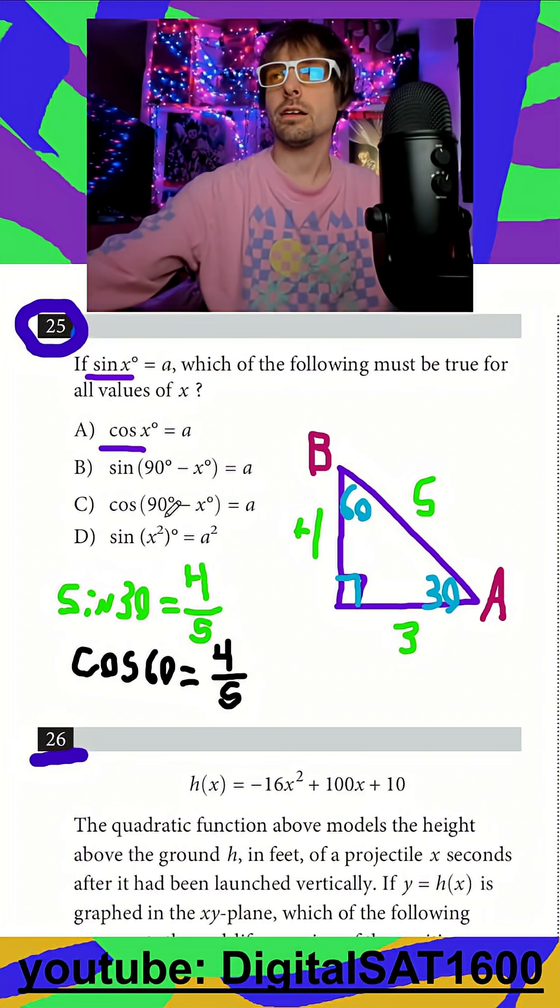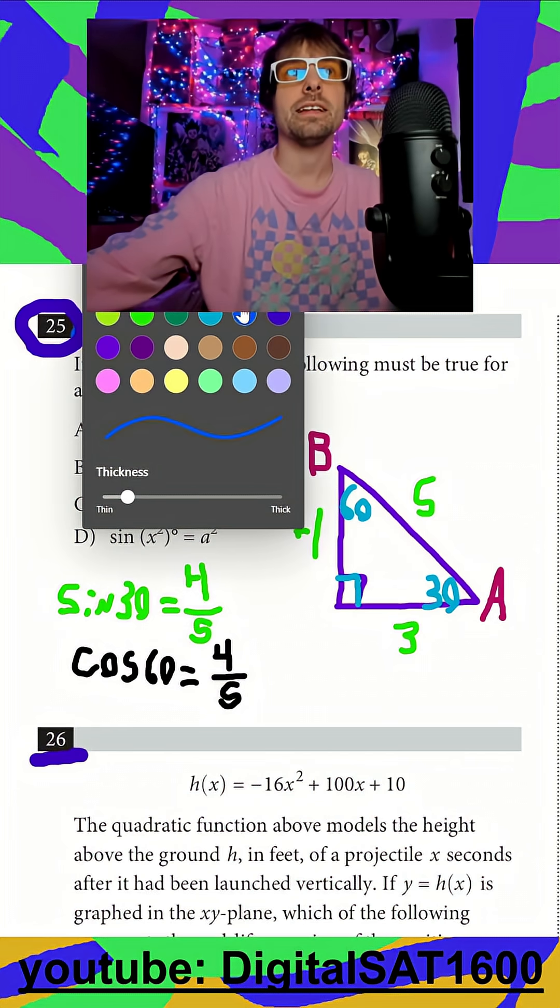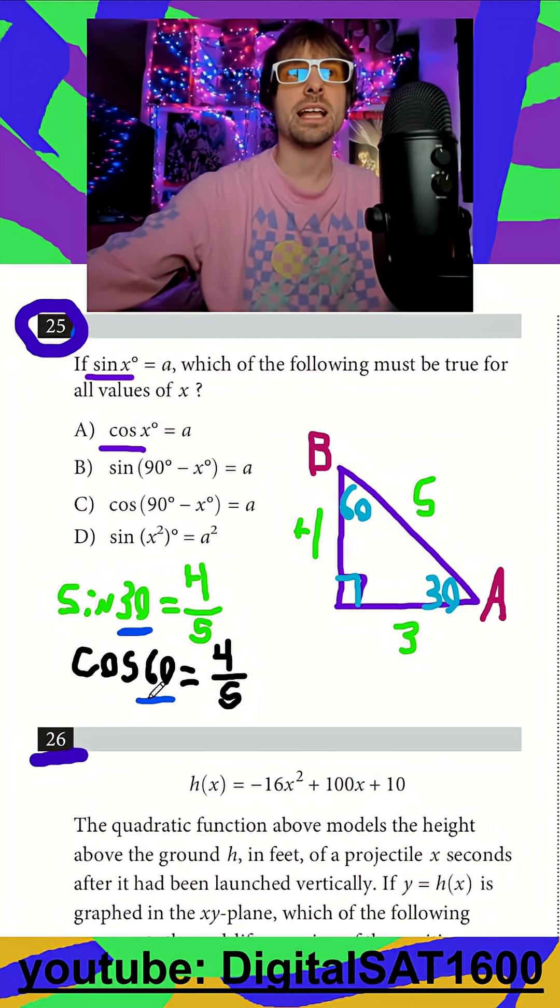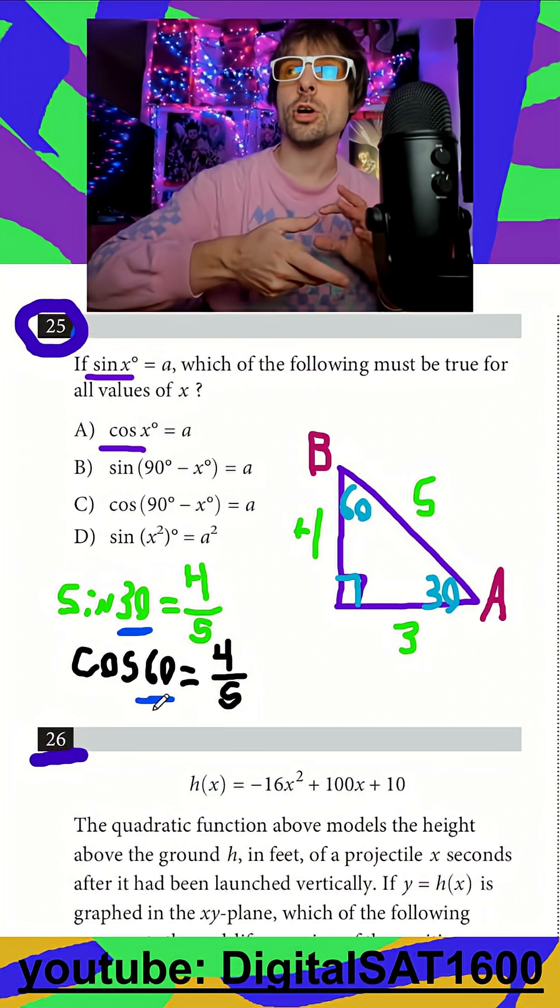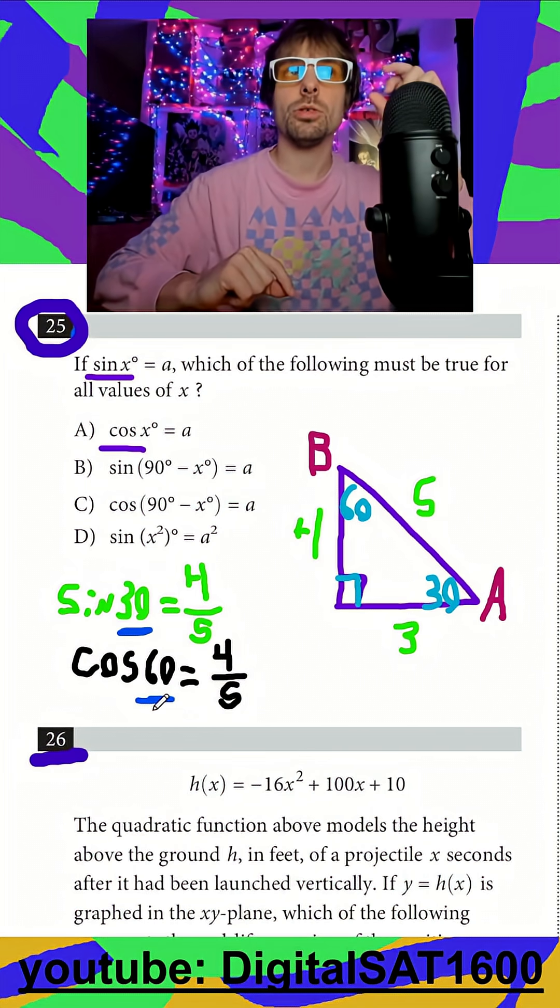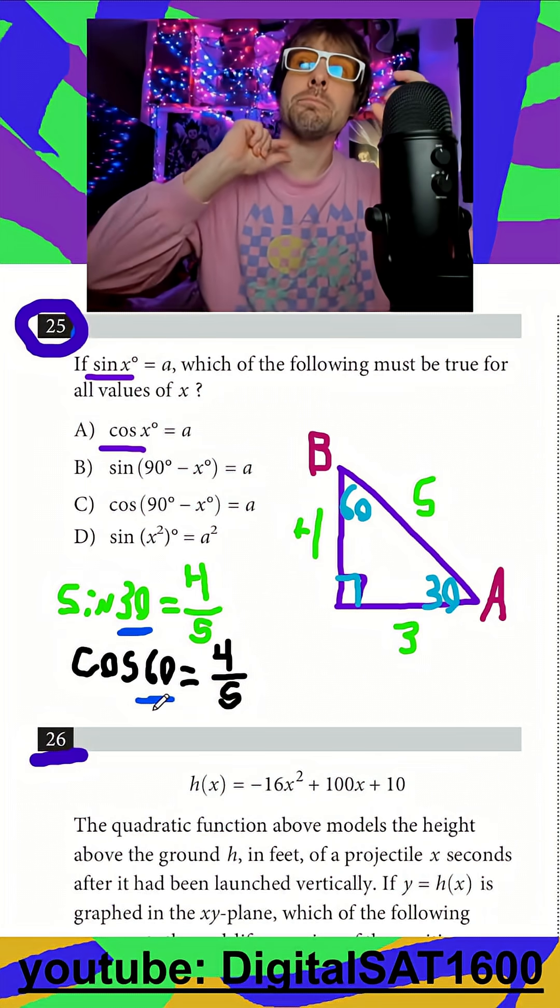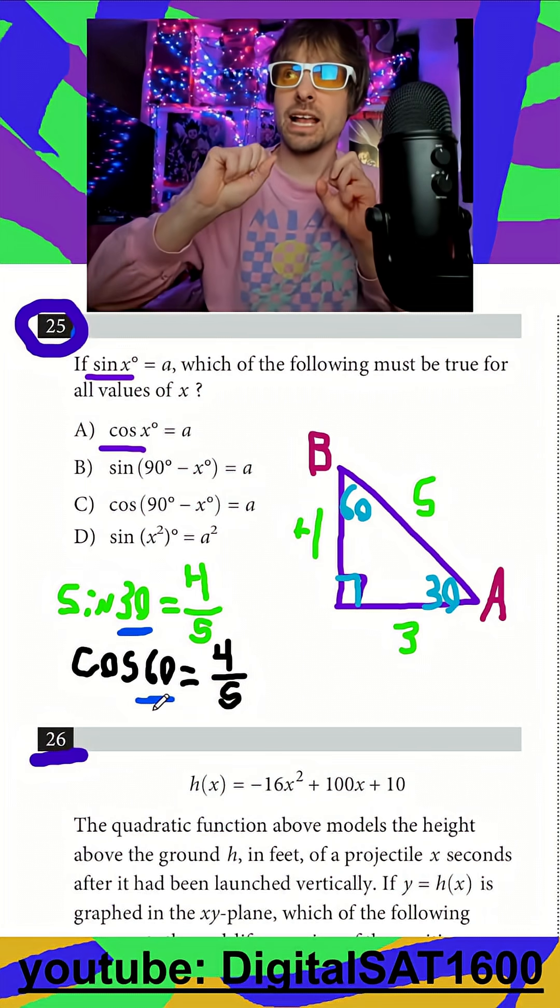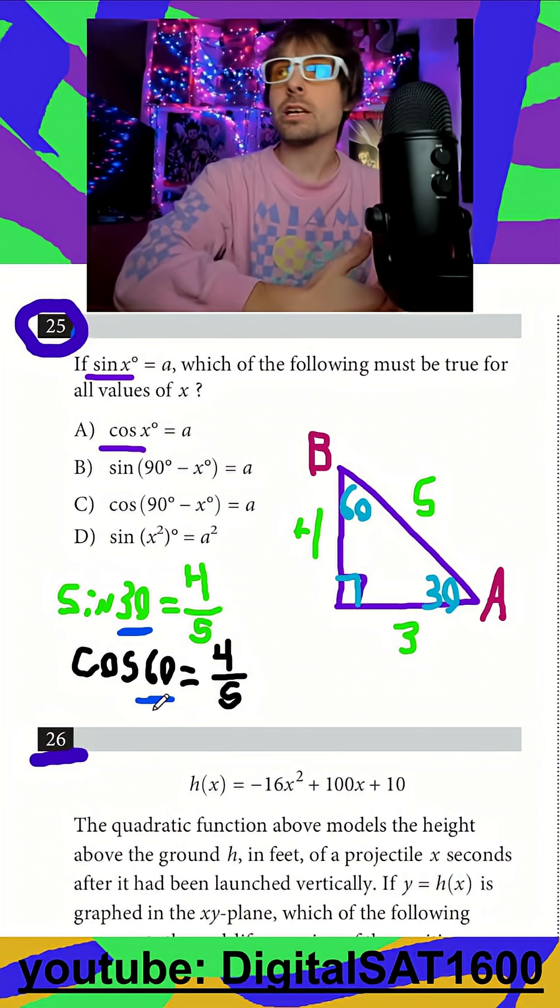So our main thing here is if you're ever taking the sine and cosine of two angles that add up to 90 degrees, those are always going to be the same. Another way to put it is the sine of an angle and the cosine of 90 minus that angle, because that adds up to 90, those are always going to be equal and vice versa.